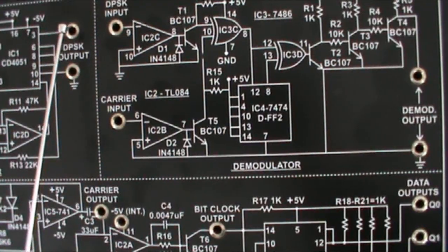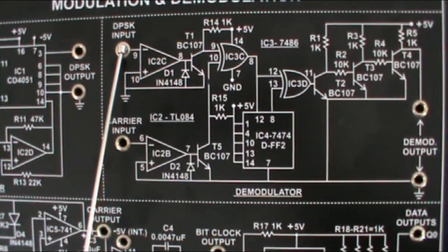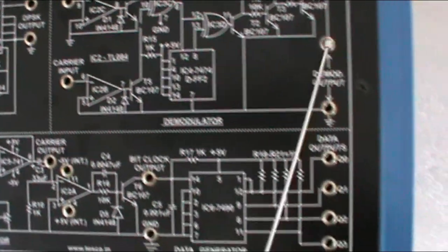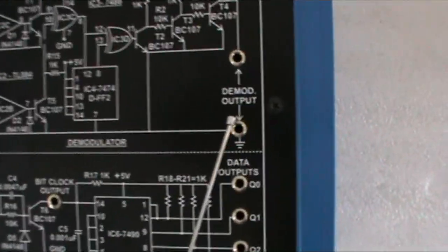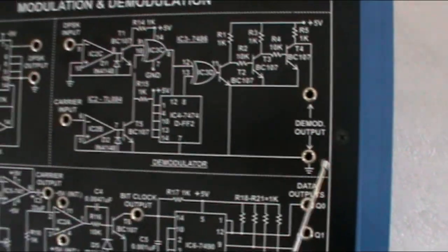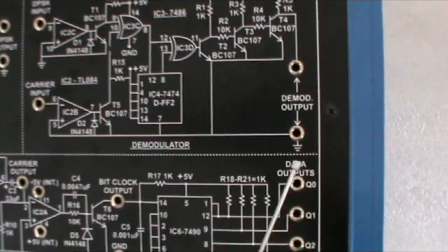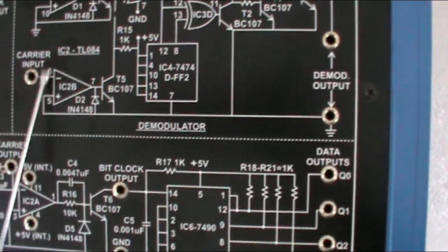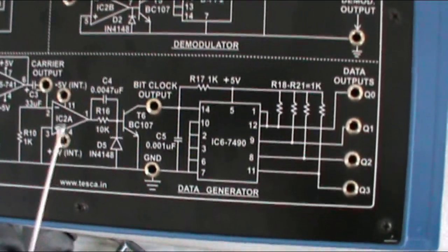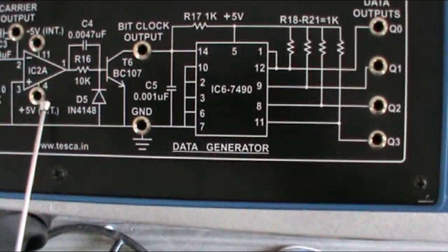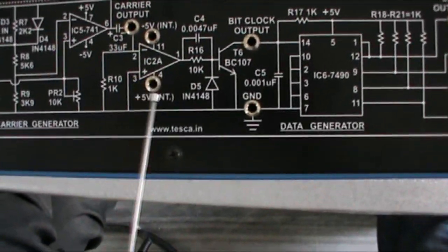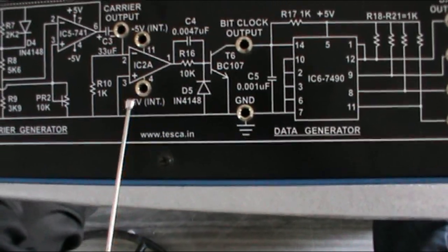We will connect this socket to this socket for the demodulation of the DPSK signal. These are the output terminals marked as demodulated output. This is the positive and this is the ground terminal. All grounds are connected to each other. This is the carrier input terminal of the demodulator section. These terminals are the supply terminals which are internally connected — minus 5V and plus 5V.